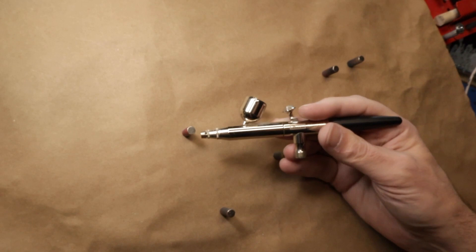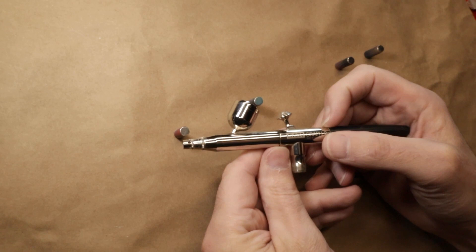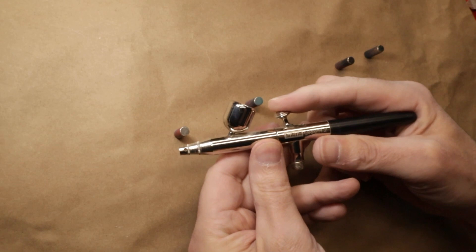What you want to look for is a double action airbrush. There are very few single action airbrushes left on the market so that makes it easy, but a double action just means that you have both control of the air flow on and off and the paint flow which is back and forward.